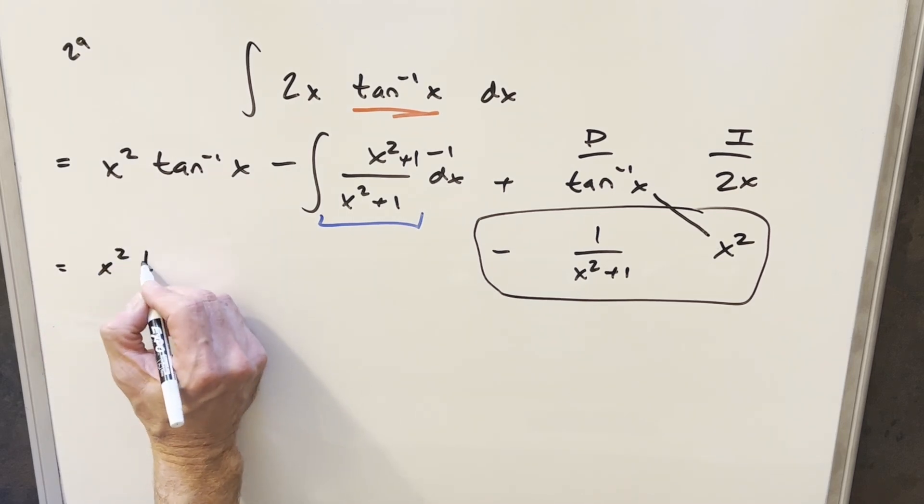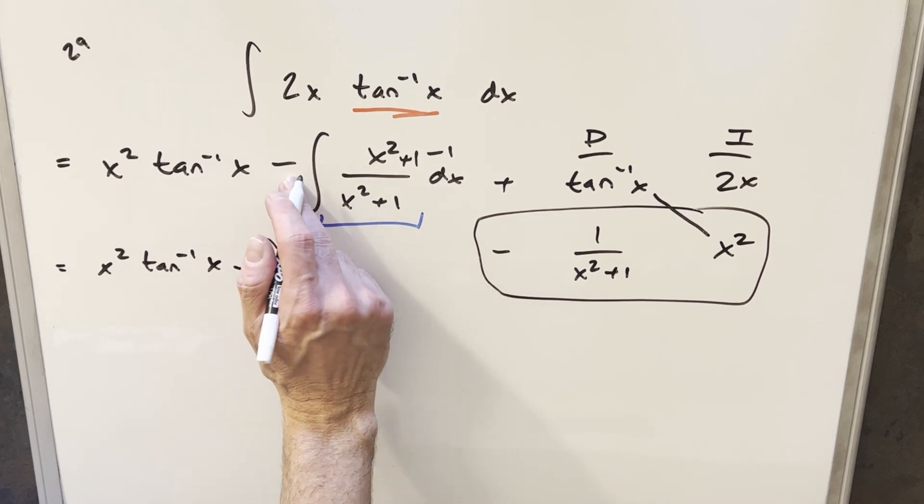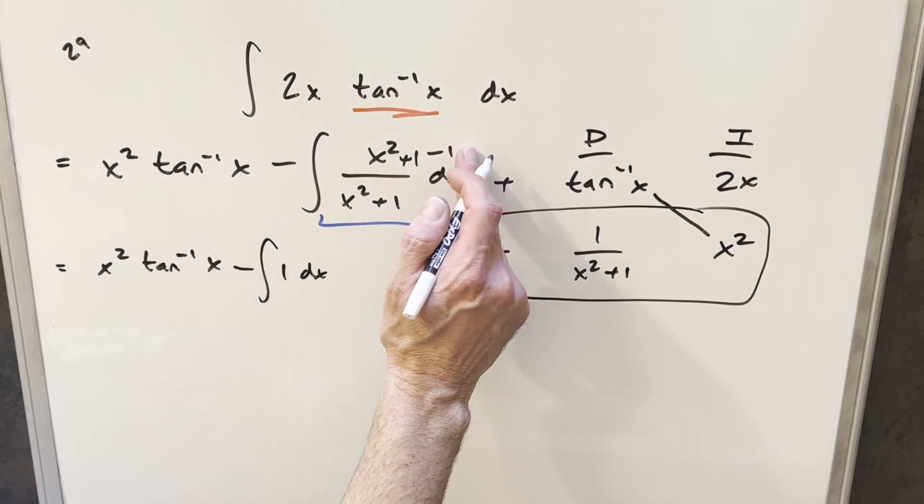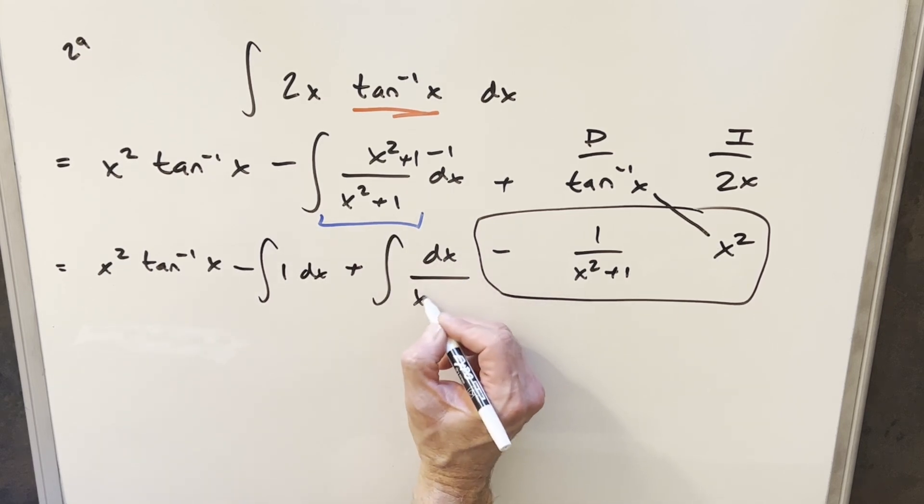So then when I just rewrite this whole thing, we'll bring down this piece. We'll split this into two integrals. The first one is just going to be the integral of 1. Then the second one, distributing a minus into this minus 1, is going to give me plus dx over x squared plus 1.